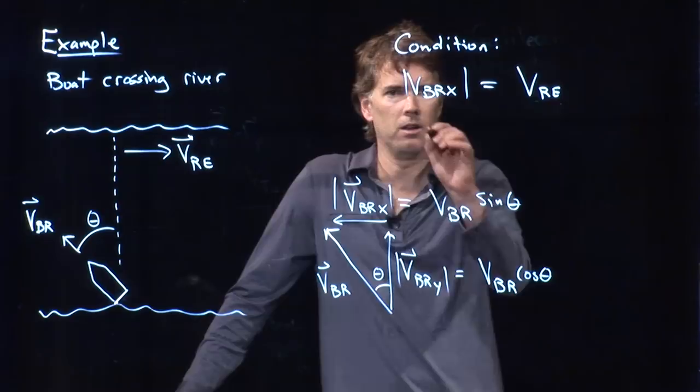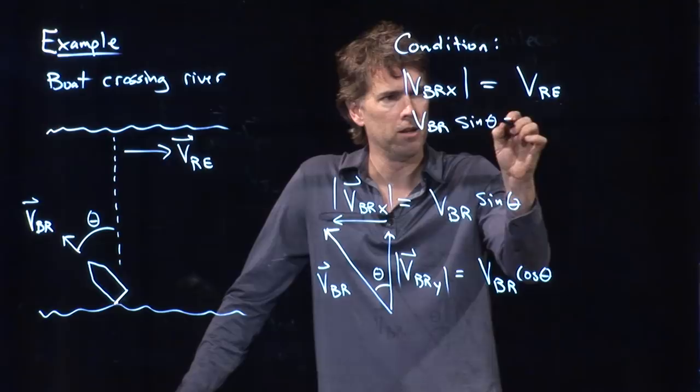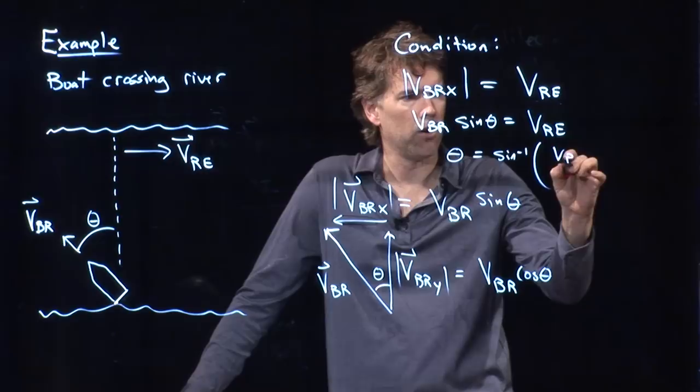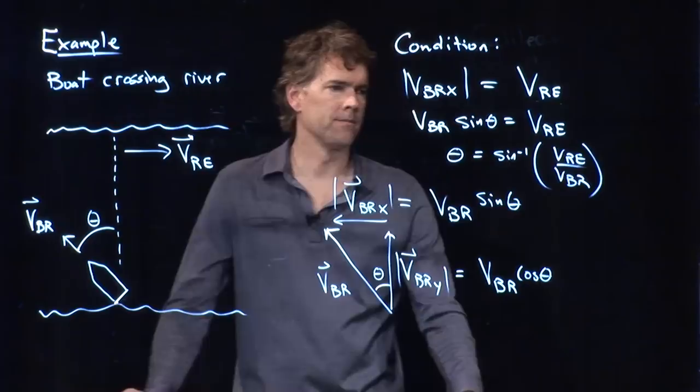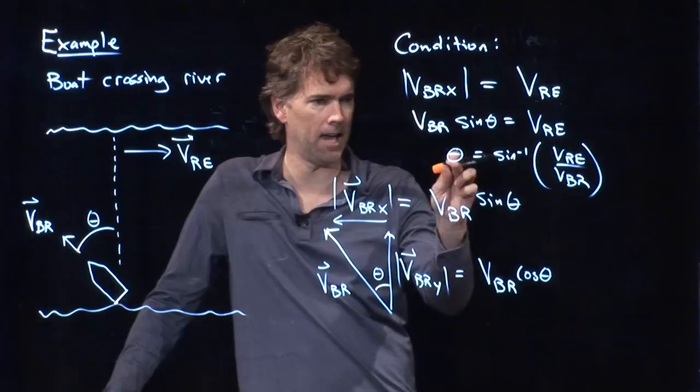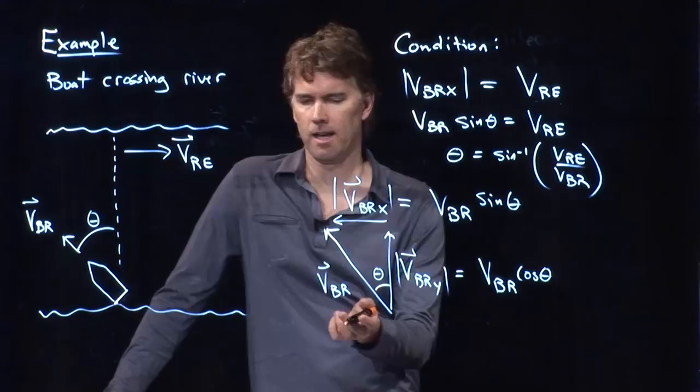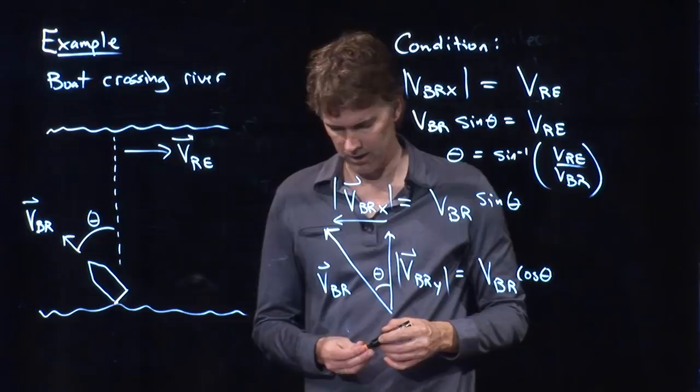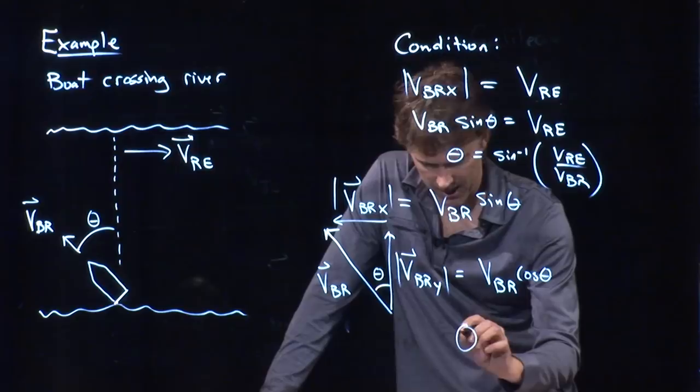All right, so look, we've got VBR times sine of theta equals VRE. And now you can calculate theta. Theta is the arc sine of VRE over VBR. And so using trig, it allowed us to, in fact, first get theta. And once you get theta, then you can go back and calculate this quantity, VBE, the velocity of the boat going across the river. Okay, hopefully that's clear. And if you want to plug in the numbers, you can double check my answer. We've got a theta of, I think, 30 degrees.